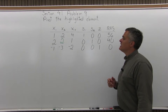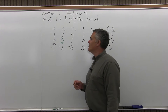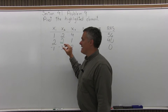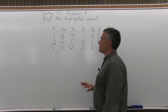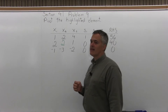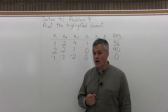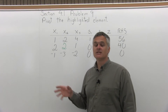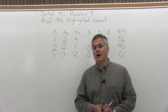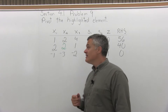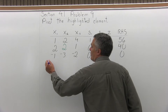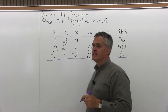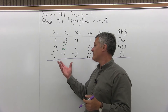It says, Pivot the Highlighted Element, and the element that was highlighted in the problem is in the X2 column — there's a 2 in the middle row, and that's highlighted. To pivot that highlighted element means to turn it into a 1, and then to zero out the rest of the column that it's in. It's like solving one column of a matrix. So we need to make the 1 first.